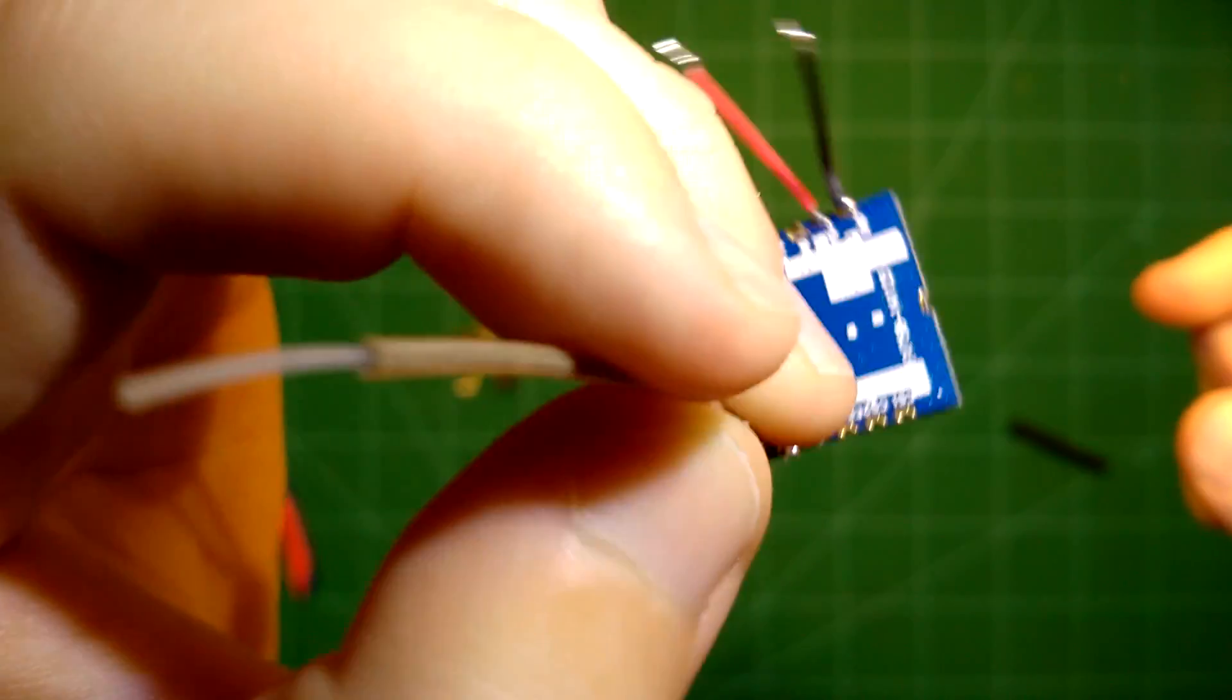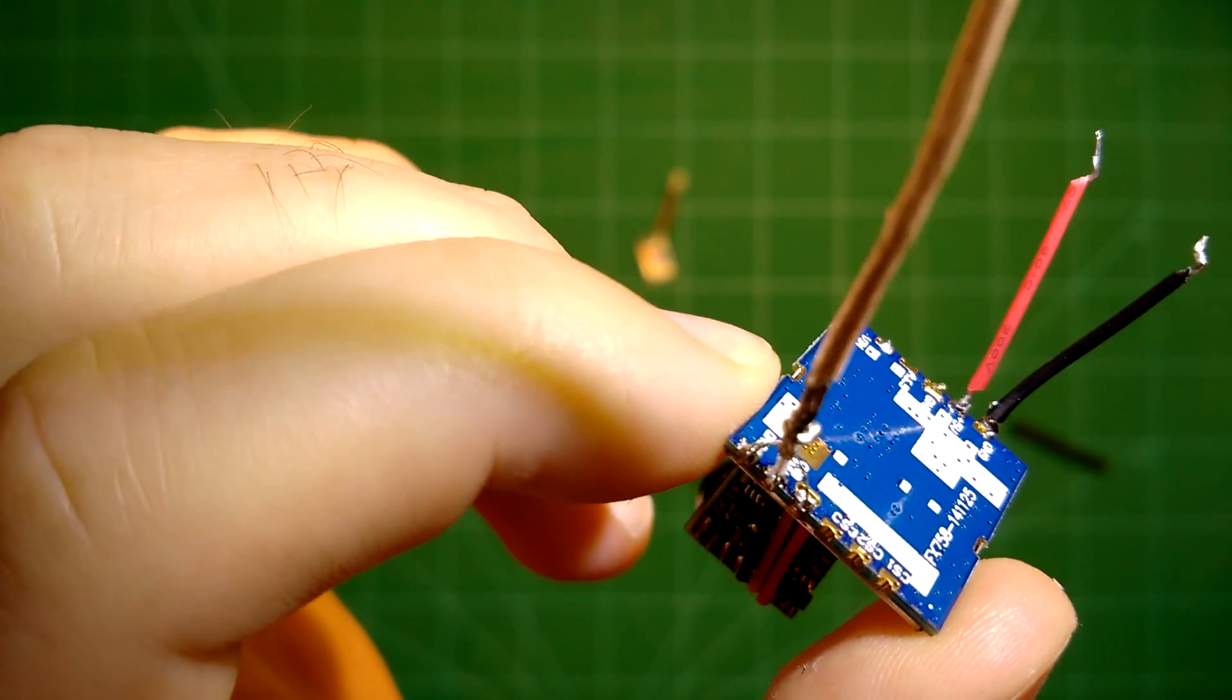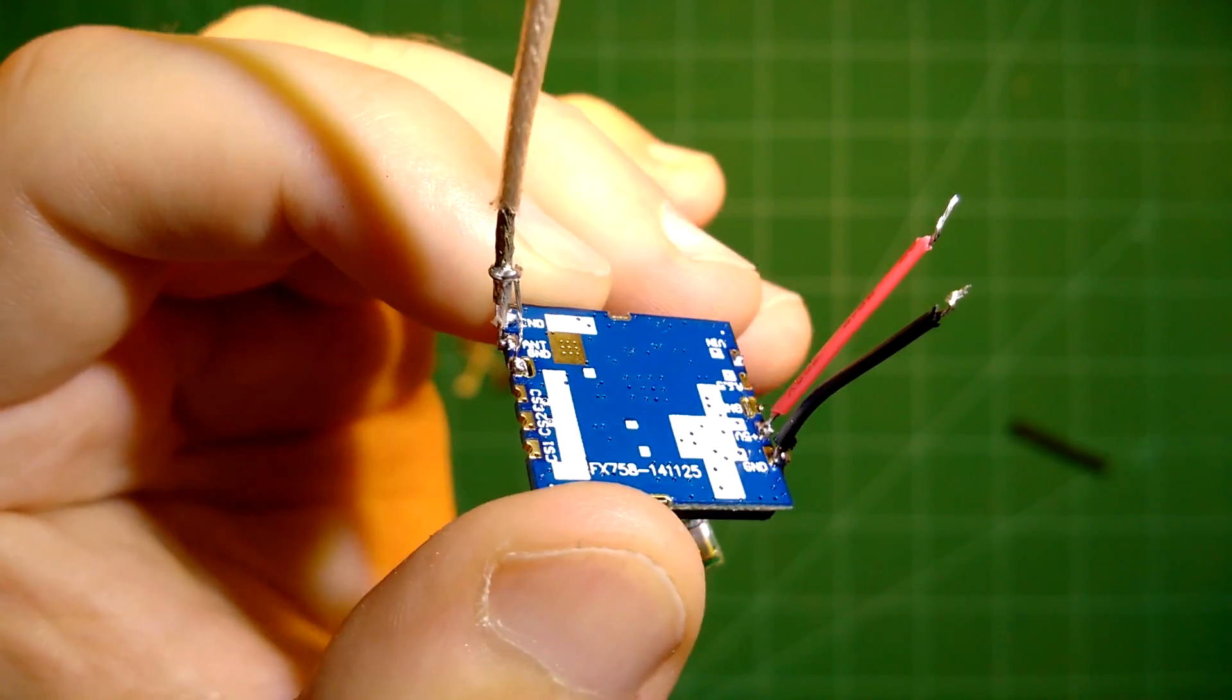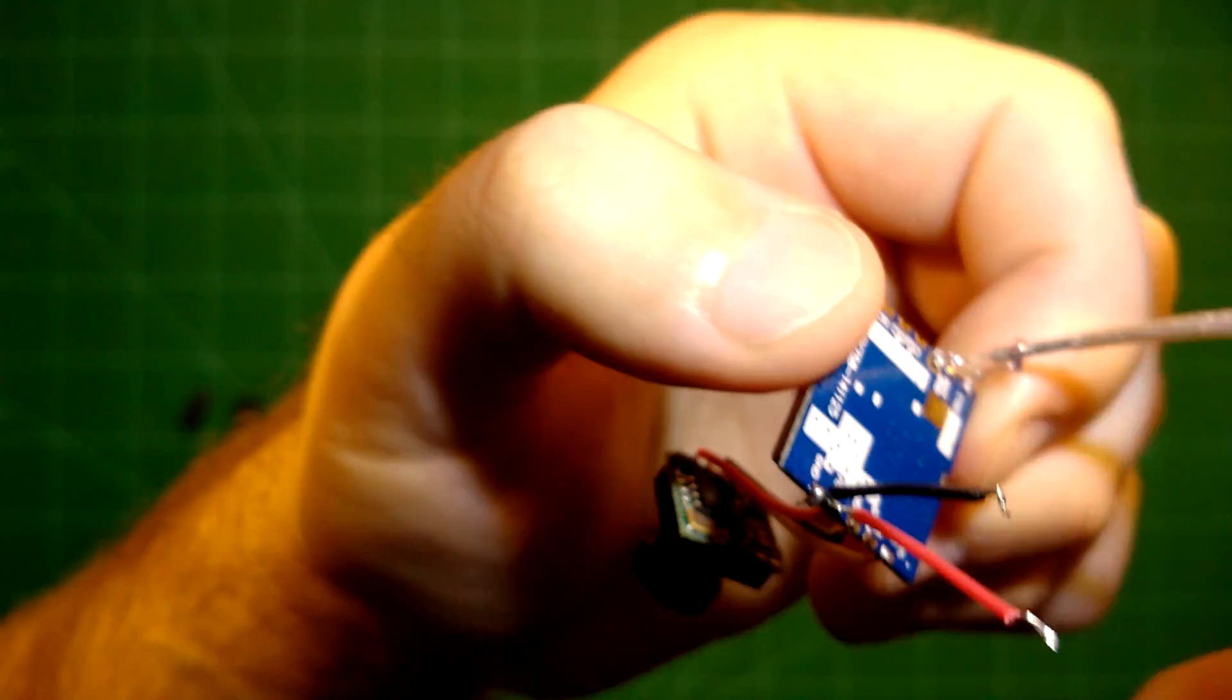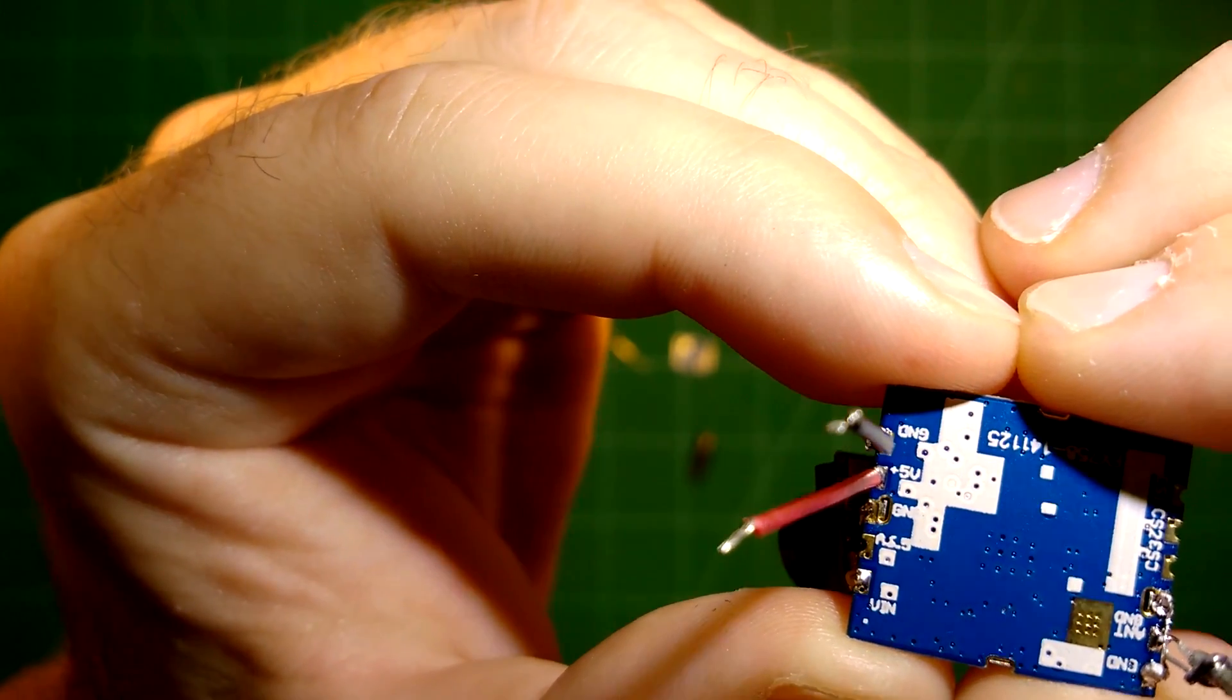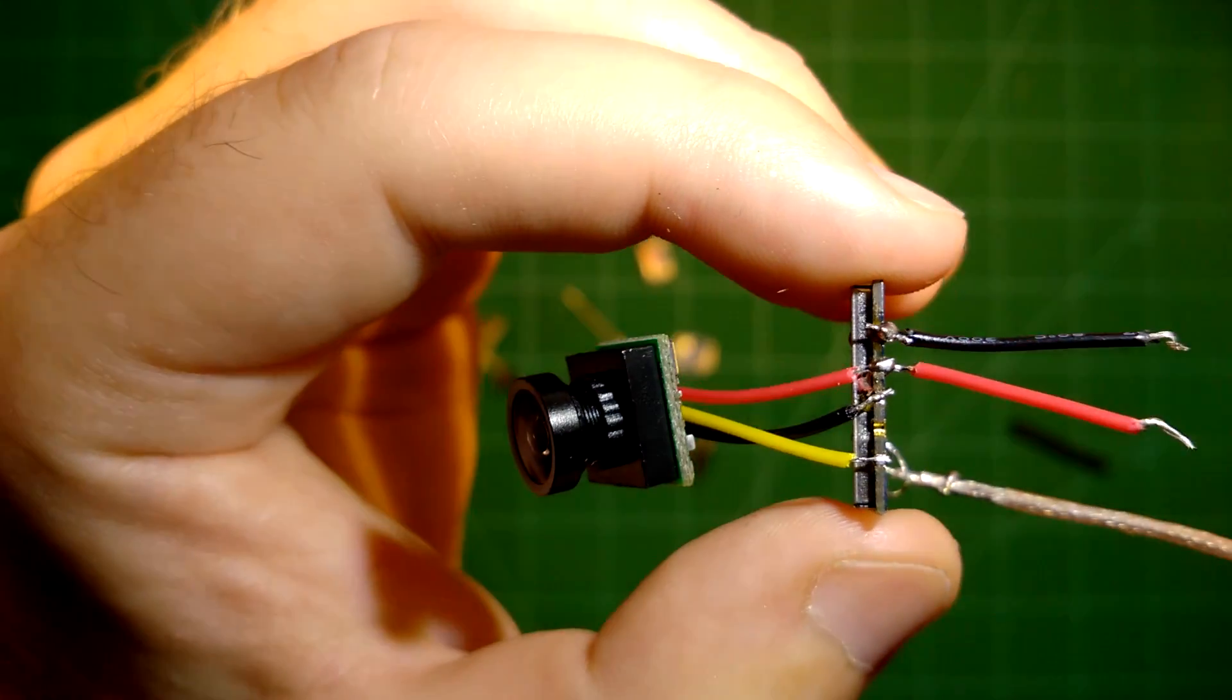So this is the antenna side. And here on the side where the power comes in I have just put two cables here. So this is five volts and ground. So I have soldered two cables here where I will connect my one cell LiPo. And on the other side I have hooked up the camera.